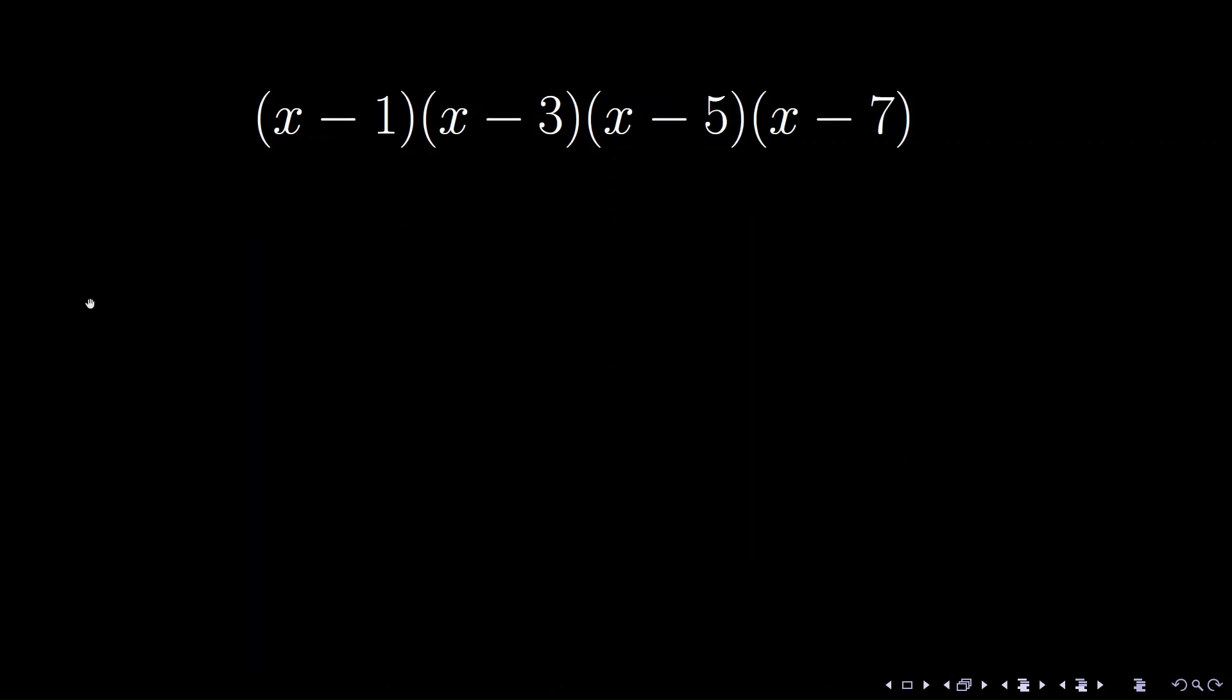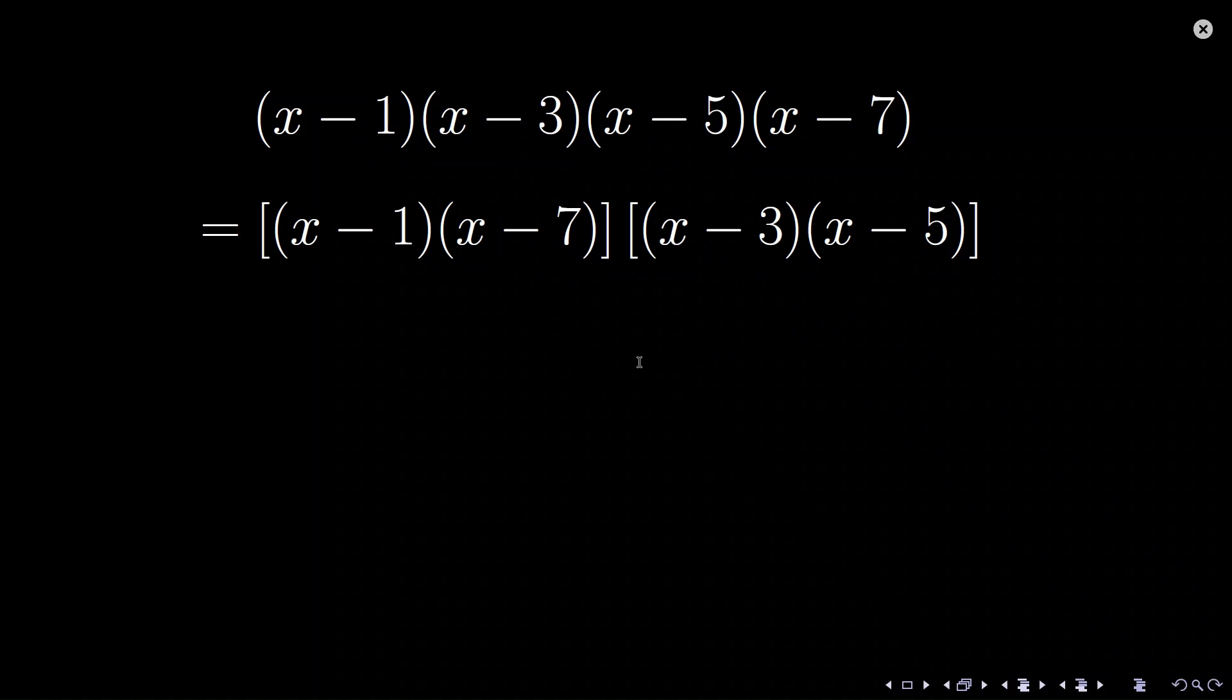Similarly, for the denominator, group the first and the last factors x minus 7 and x minus 1. The second and the third factors form another group. We have x squared minus 8x plus 7 times x squared minus 8x plus 15. Both quadratic polynomials contain x squared minus 8x.